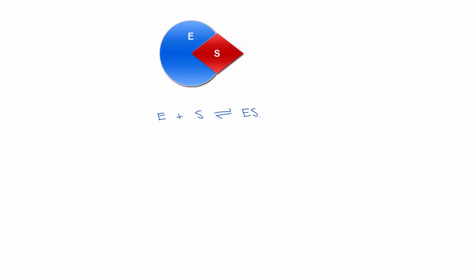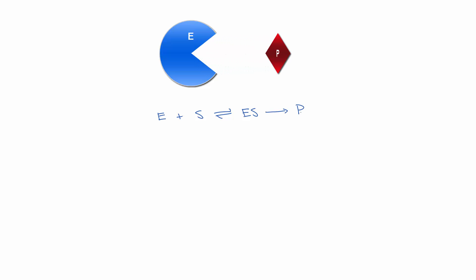Sometimes when the enzyme and the substrate are bound, a reaction will happen that produces our desired product. We can label the rate constants of each of these steps: K1 for the forward step of the enzyme-substrate binding, K-1 for the reverse of that equilibrium, and Kcat as the rate constant for the step of the enzyme-substrate complex going to the product.